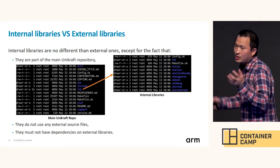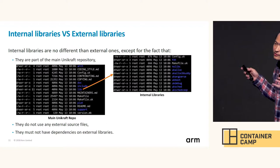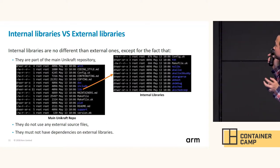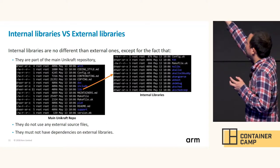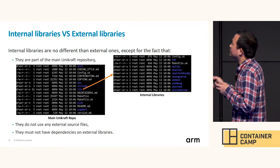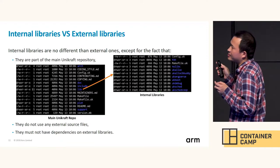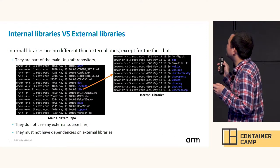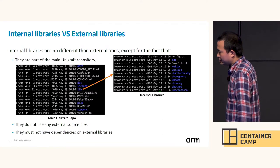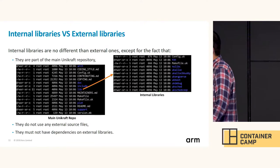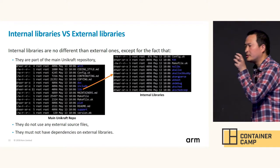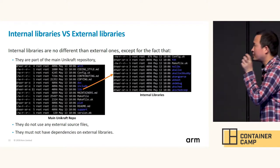This means all source files for internal libraries must be placed under that folder, and they must not have any dependencies on external libraries. This means UniKraft can be built by itself.